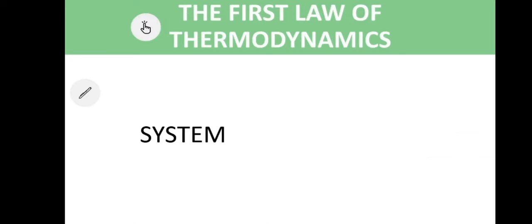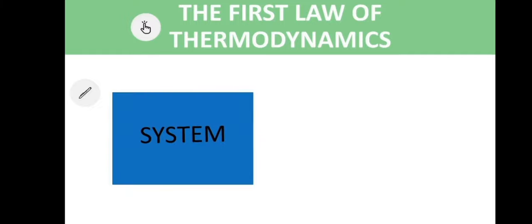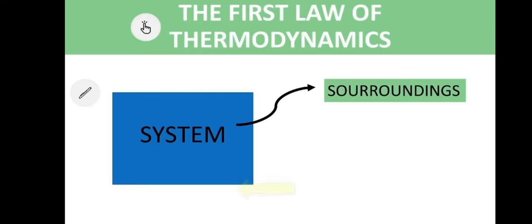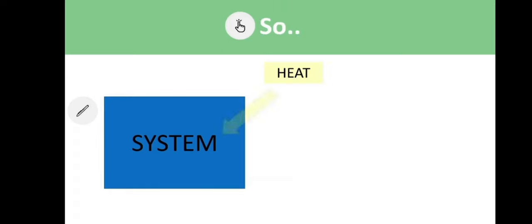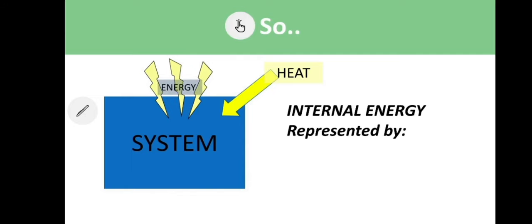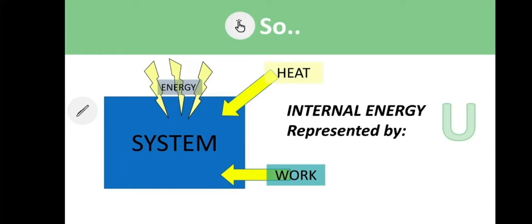Let's talk about the first law of thermodynamics. Let's say this box is the system, and everything outside of it is considered the surroundings. Energy can flow into or out of the system, and there are two ways that energy can do so: heat and work. If heat flows into the system, the system gains energy, known as internal energy, represented by capital U.